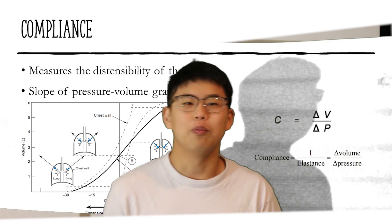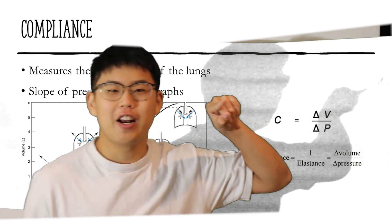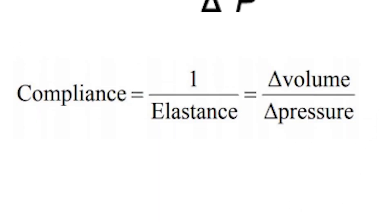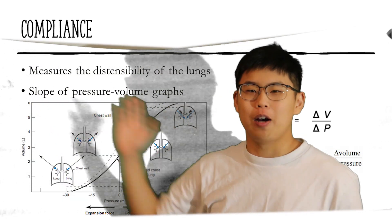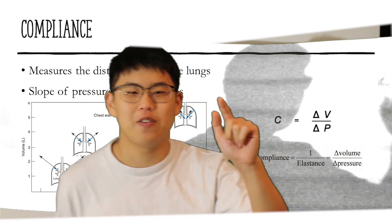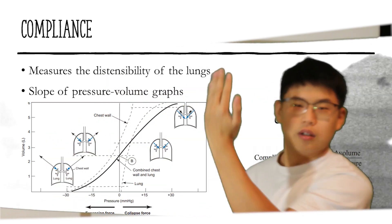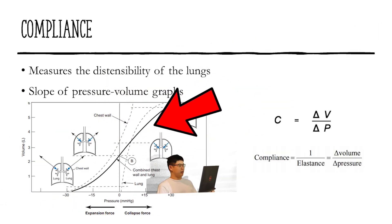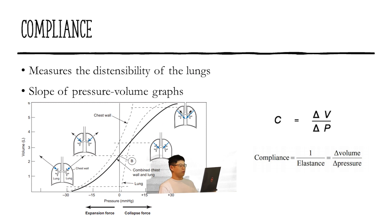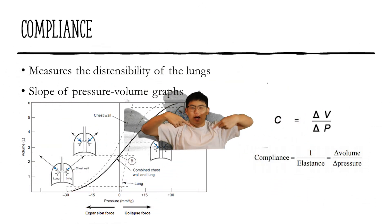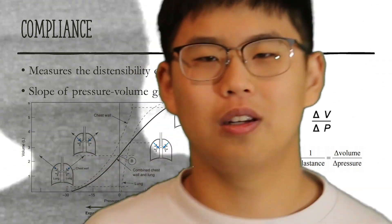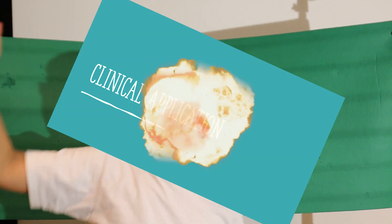Next up: compliance. Compliance is the change in volume of a container divided by the change in pressure. It is the inverse of elastance and a measure of distensibility. In a pressure-volume graph of the thoracic cavity, it is the slope. The dark line is the compliance of the combined chest wall and lungs, while the upper dotted line is the compliance of just the chest wall. The arrows represent the direction of elastic recoil — the lungs collapse inward while the chest usually expands outward.